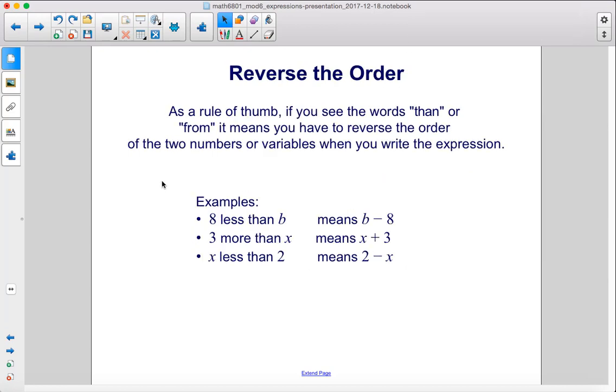As a rule of thumb, if you see the words than or from, it means you have to reverse the order of the two numbers or variables when you write the expression. For example, 8 less than b means b minus 8. 3 more than x means x plus 3. x less than 2 means 2 minus x. If you see the word than in here, just flip them and use the minus sign for less and an addition sign for more.